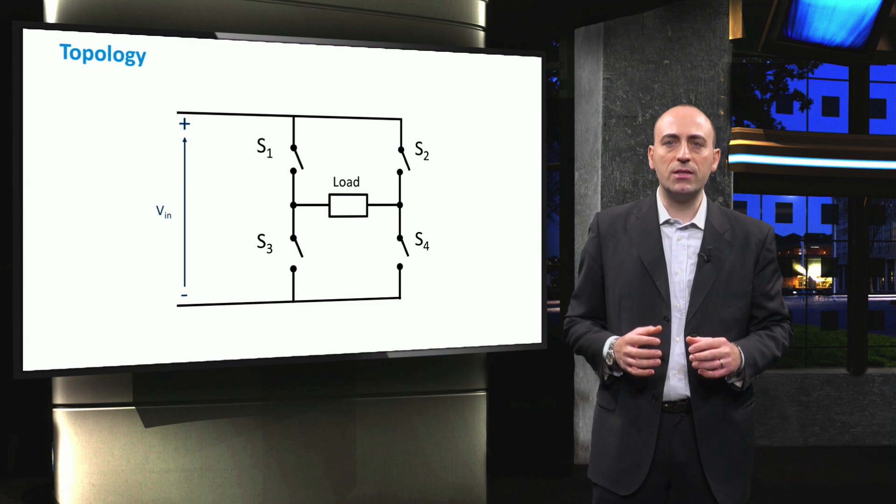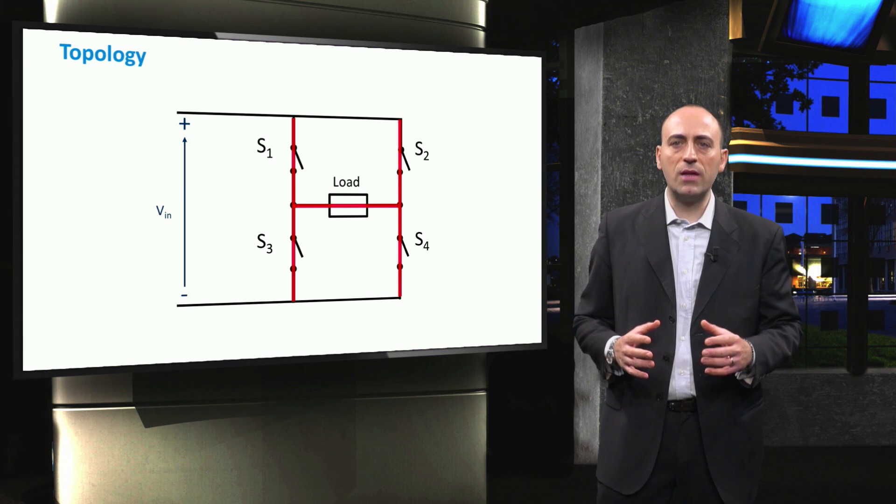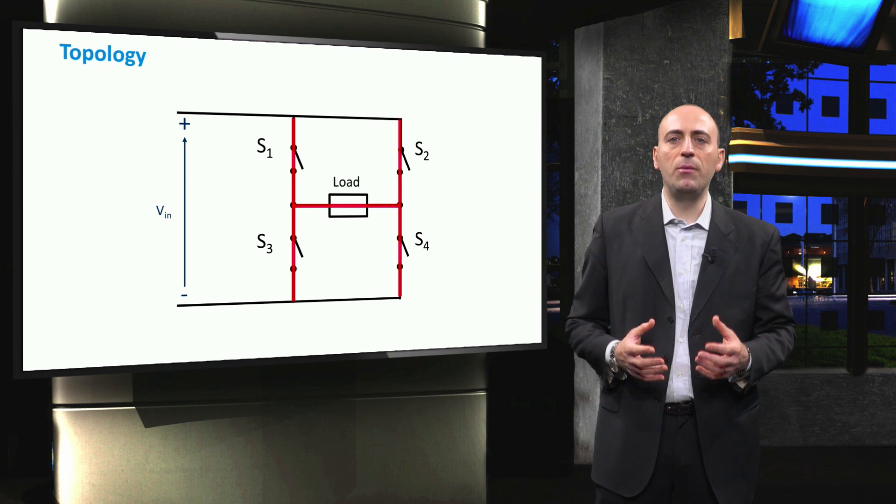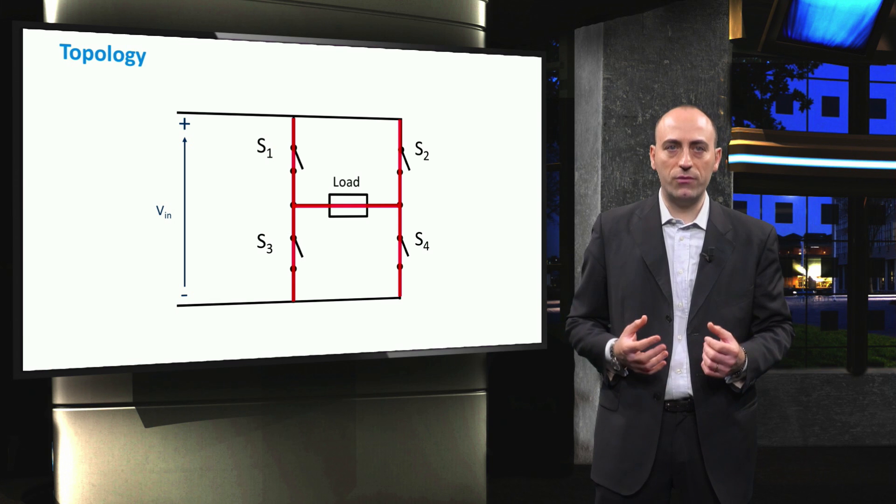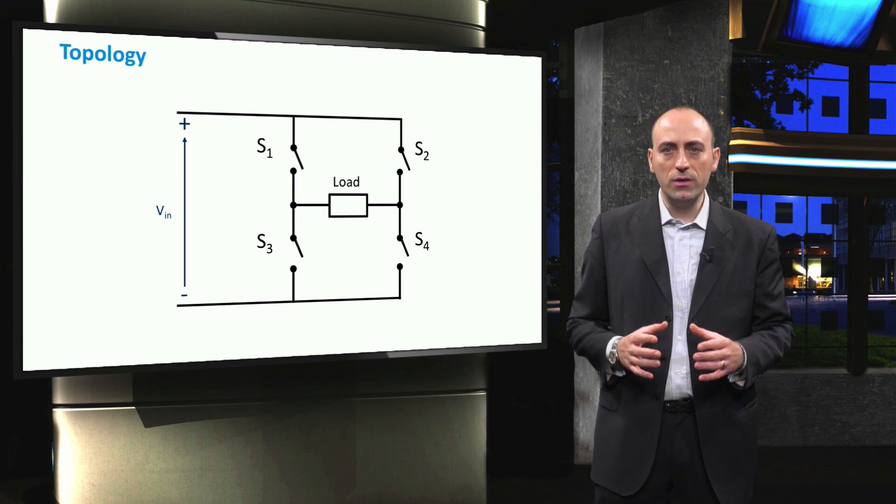The H-Bridge presents four switches, named from S1 to S4. The name of this type of converter is given by the typical shape, which resembles the letter H. The load here is situated in the middle, between the four switches.